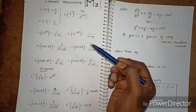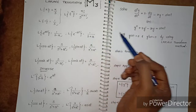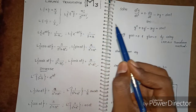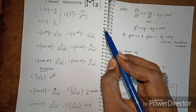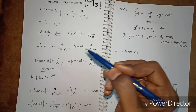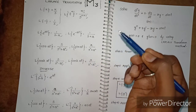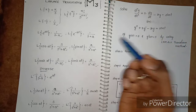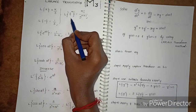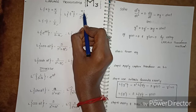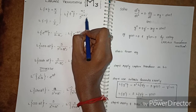Laplace is a function of s. The answer always appears as a function in the denominator. L of t power n is equal to n factorial by s power n plus 1.